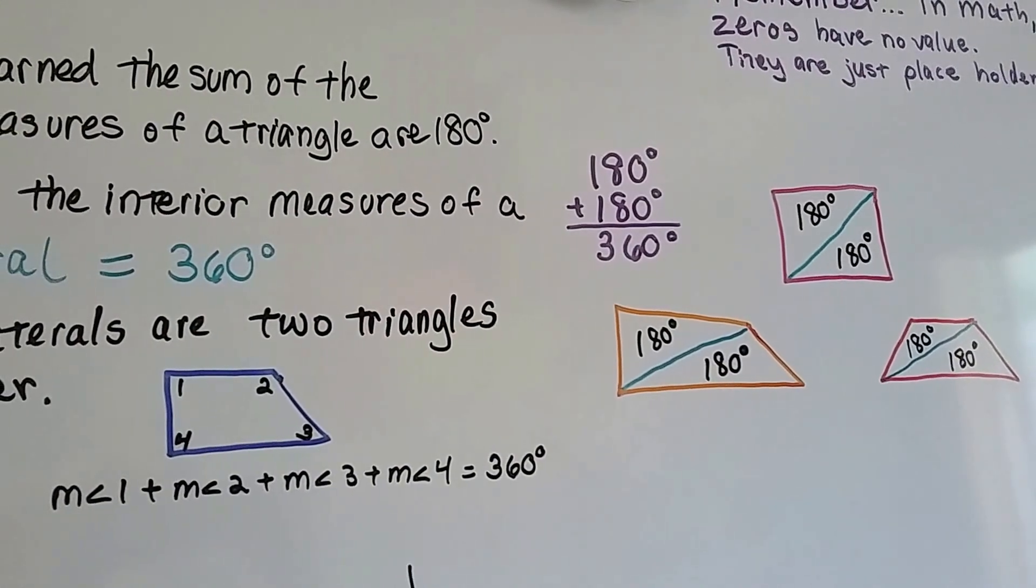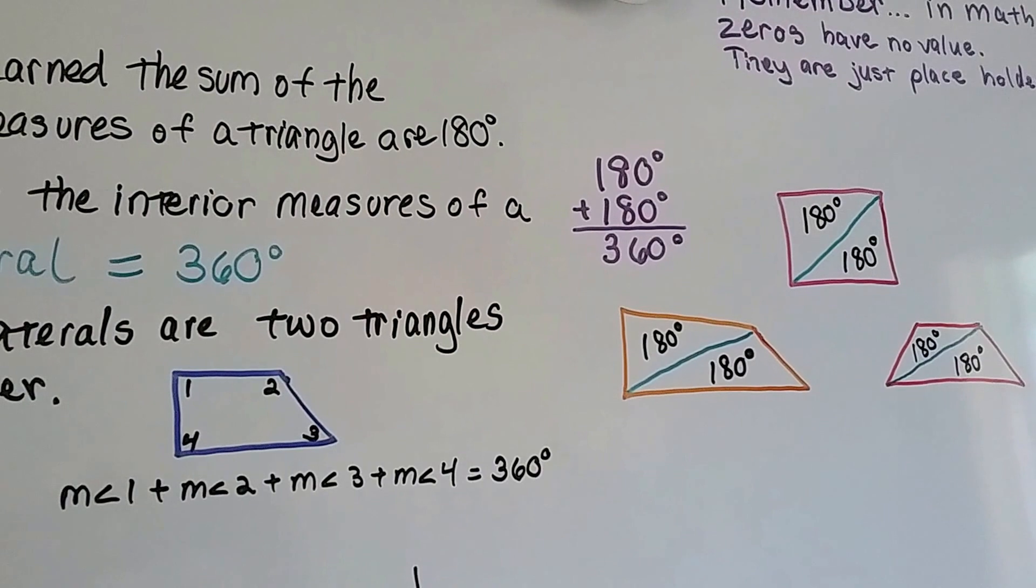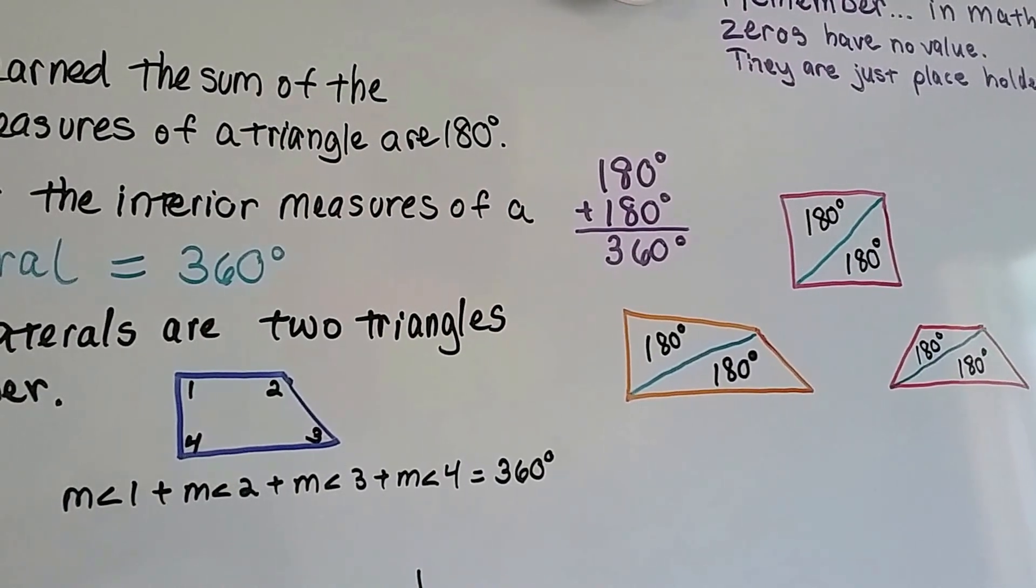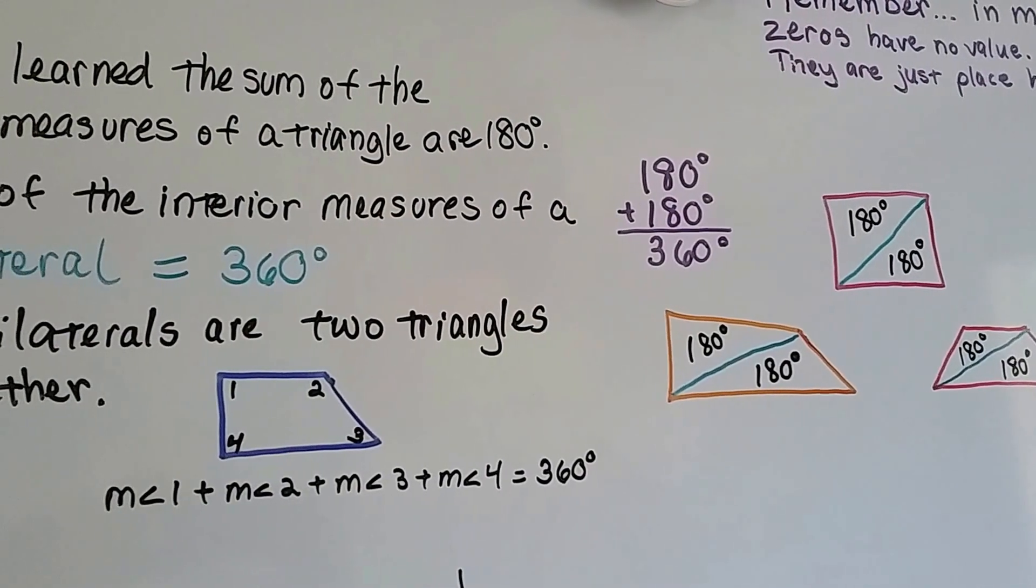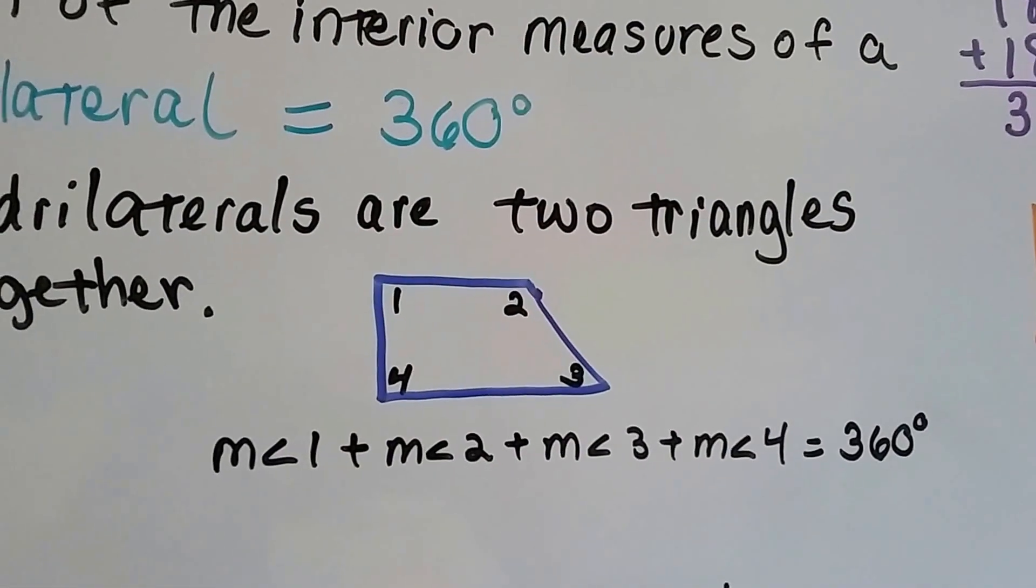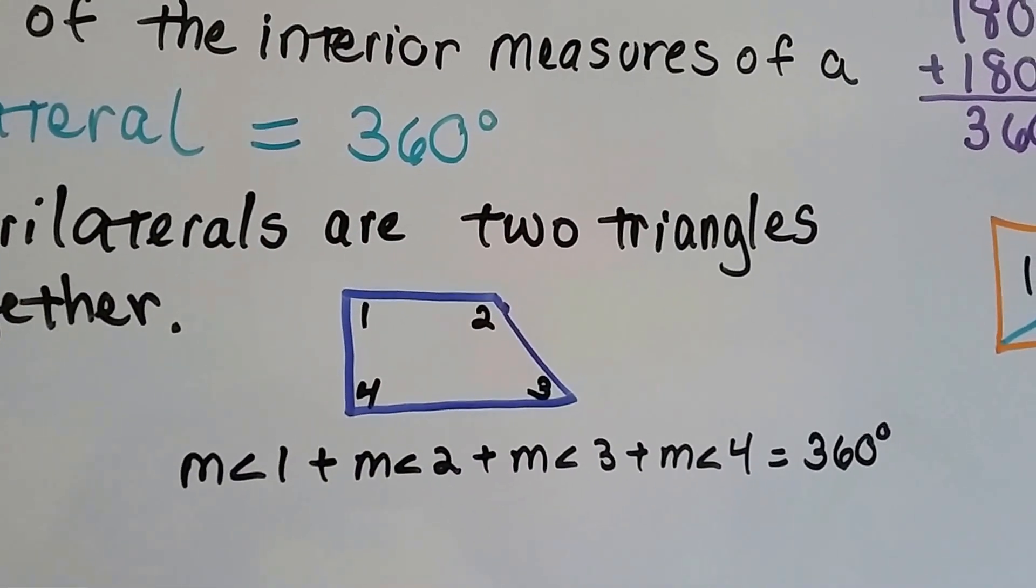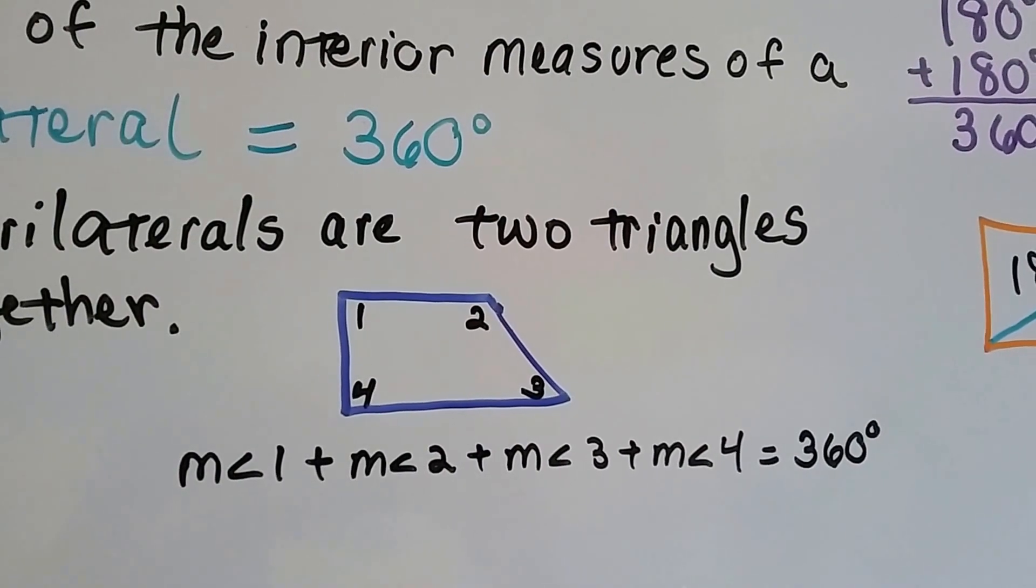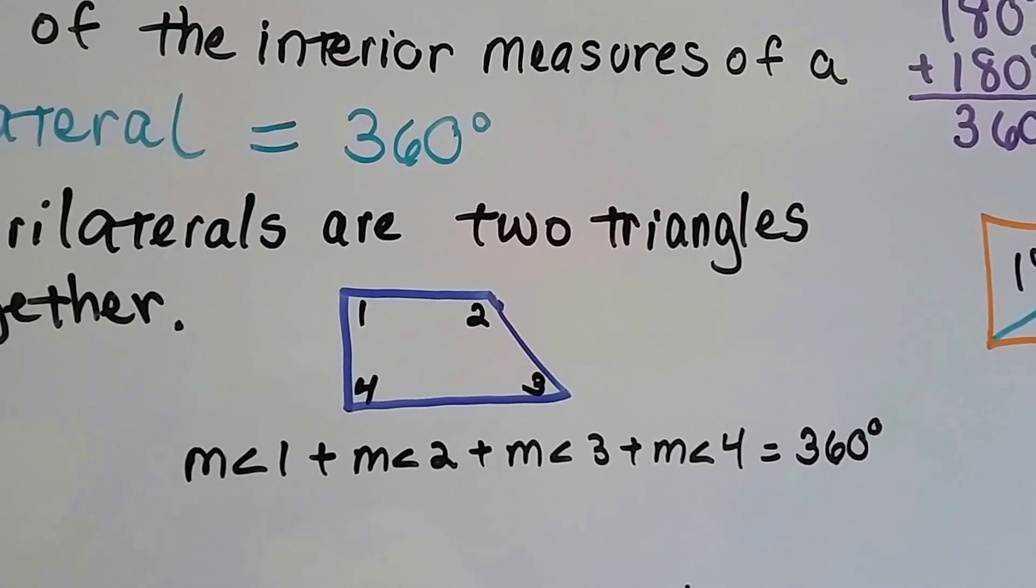It doesn't matter what the quadrilateral looks like. If you split it from cross vertices like that, you're going to find out that you've got two triangles. See in this blue one, the measures of angle 1 plus 2 plus 3 plus 4, all the interior angles, if you add them all up together, they're going to total 360.